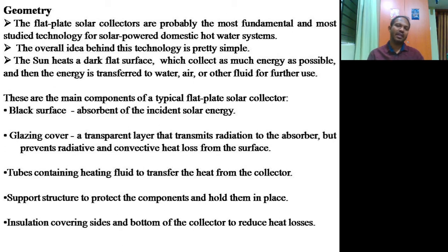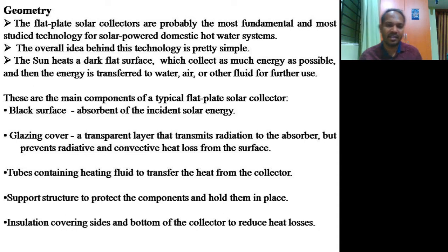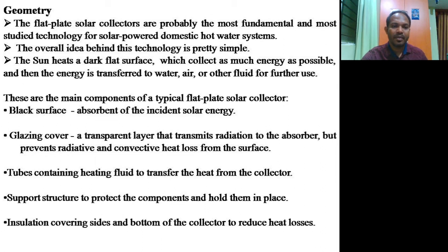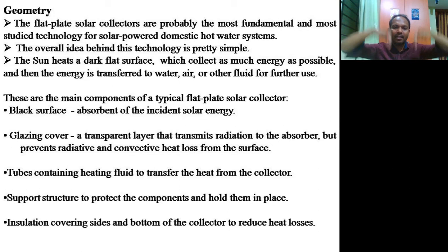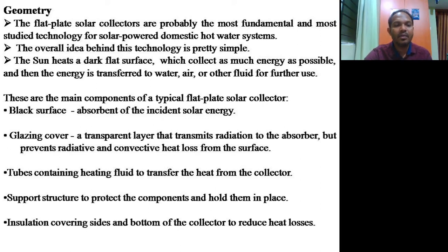The flat plate collectors will always be placed at a certain height from the roof — elevated slightly above ground level, inclined — in order to avoid back and bottom losses. That is what we call the support structure. Insulation covering the sides and bottom of the collector is used to reduce heat losses.